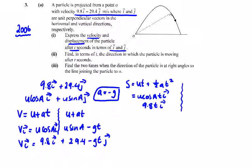In the j direction, we have u sine alpha times t minus a half a, so minus g over 2 t squared, or the 29.4 that's given to us times t minus 4.9t squared.